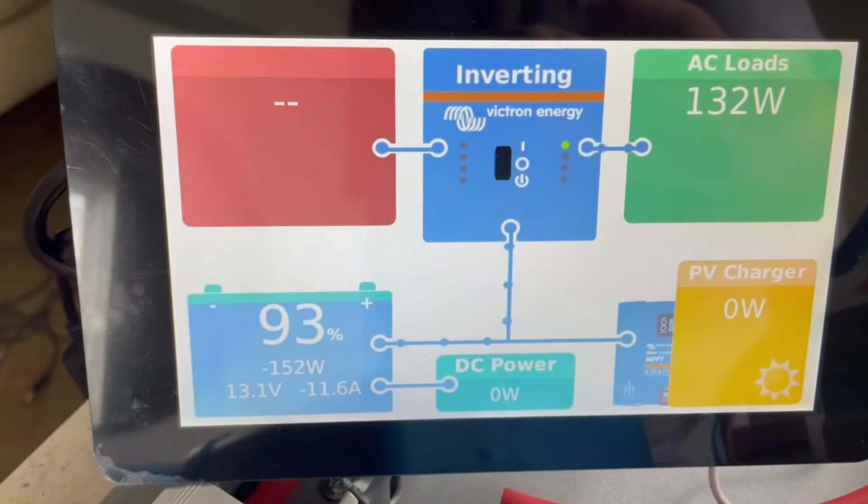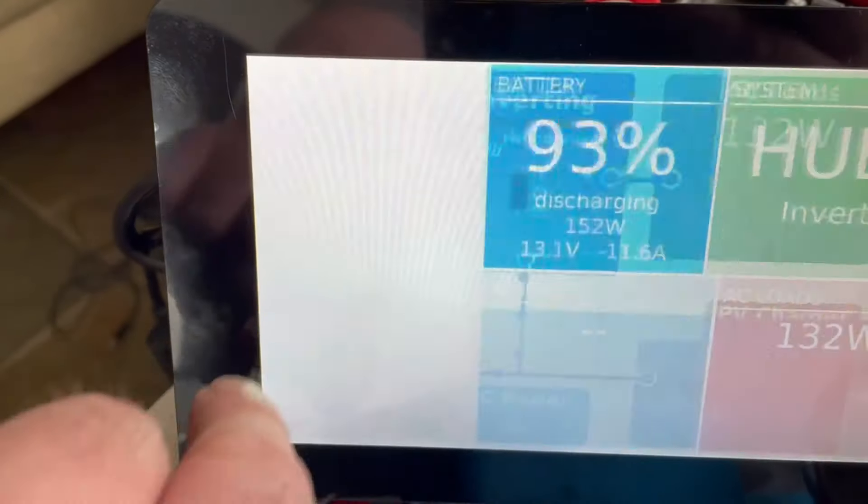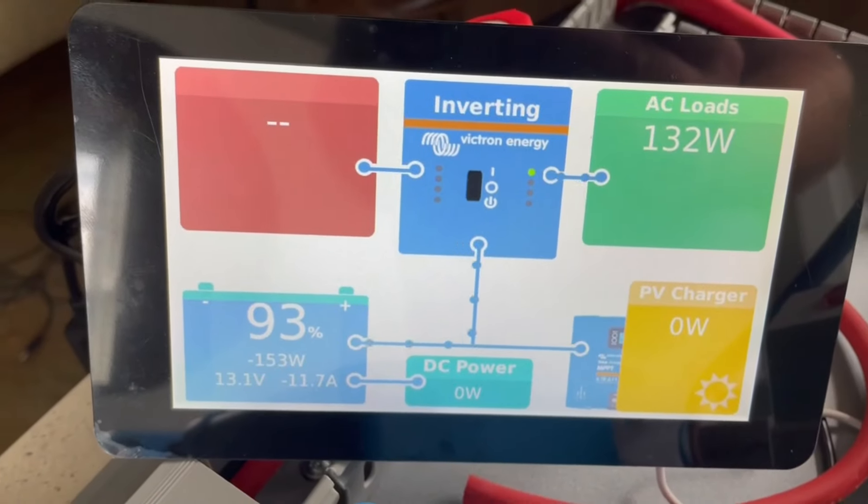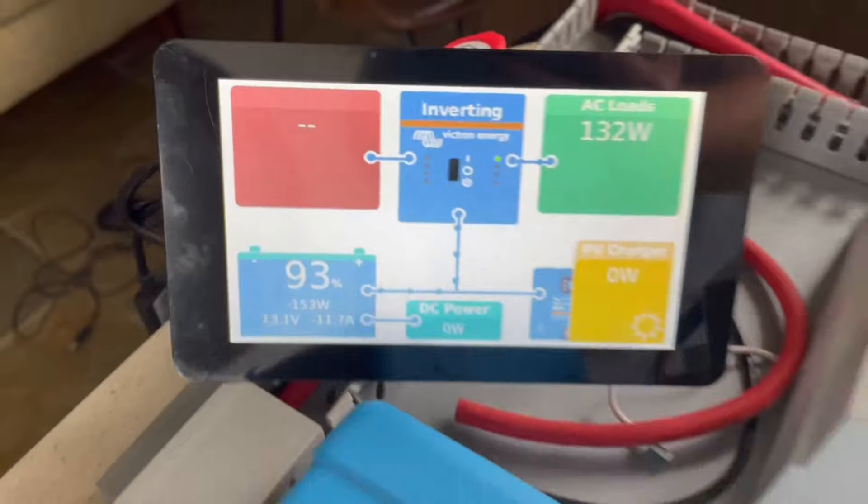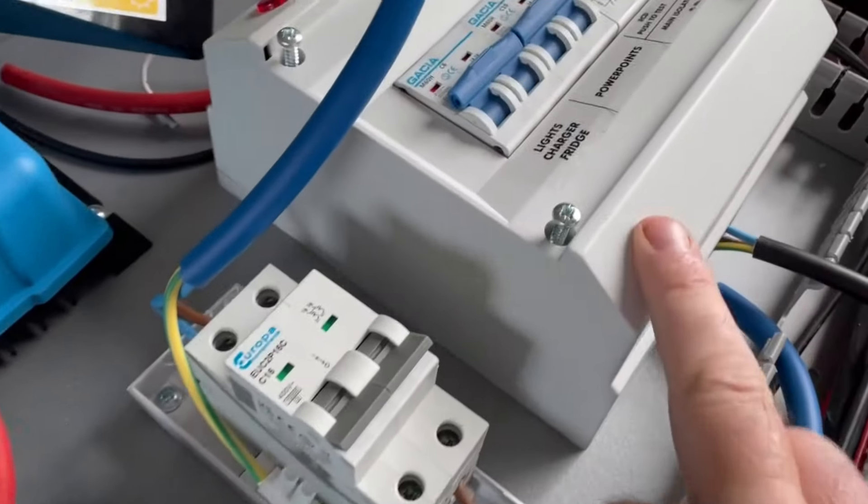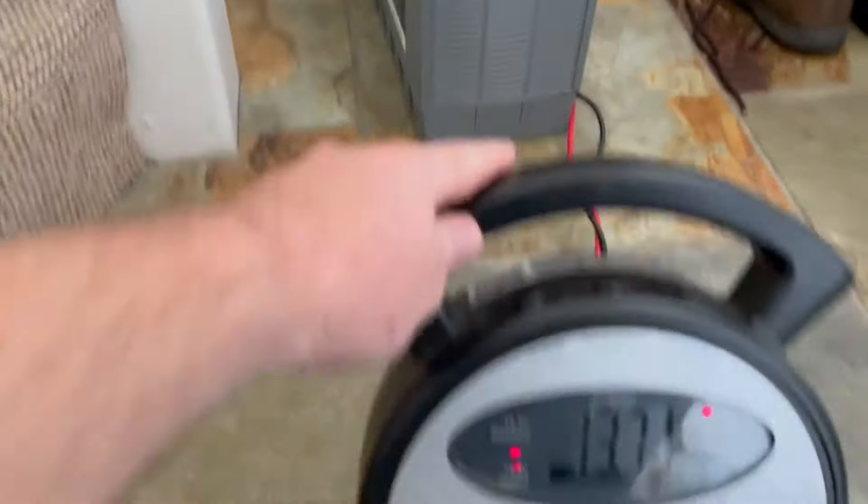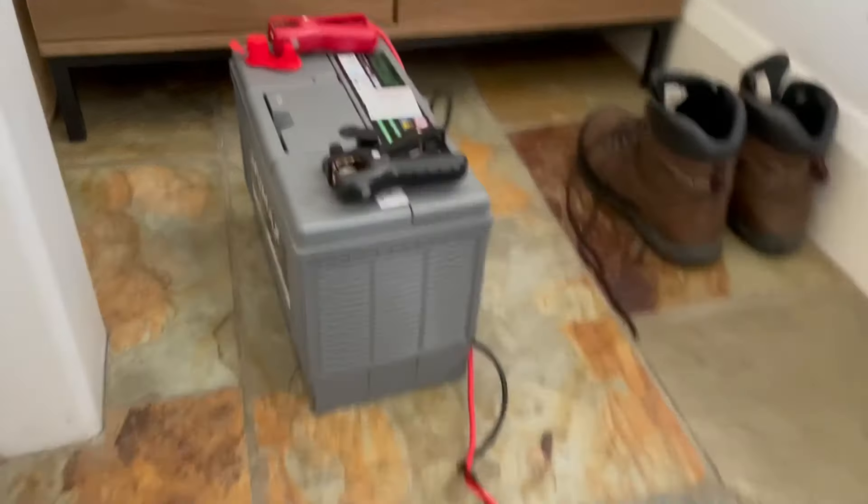The touchscreen shows exactly what's going on. We're currently running a dummy load on AC, doing 132 watts of AC output going through the distribution and main socket. We're using a battery charger to charge a leisure battery as a dummy load.